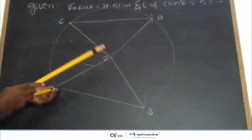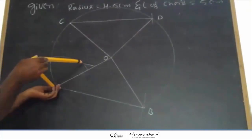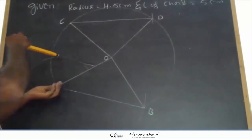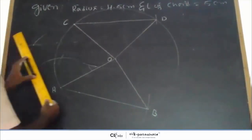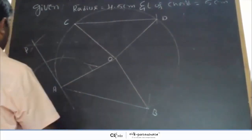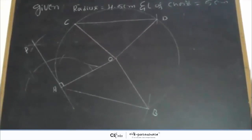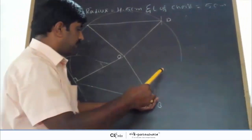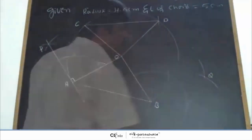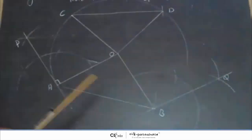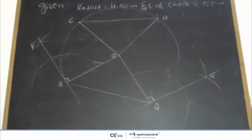Now construct 90 degree angles at point E. With E at the center, draw a semicircle and construct a 90 degree angle, marking point P, then join AP. Here, angle PAO is 90 degrees. Similarly, construct a 90 degree angle at B by marking point Q and joining BQ. Here, angle QBO is 90 degrees.